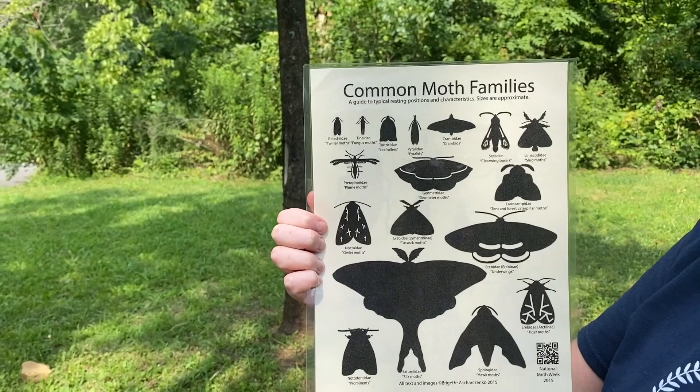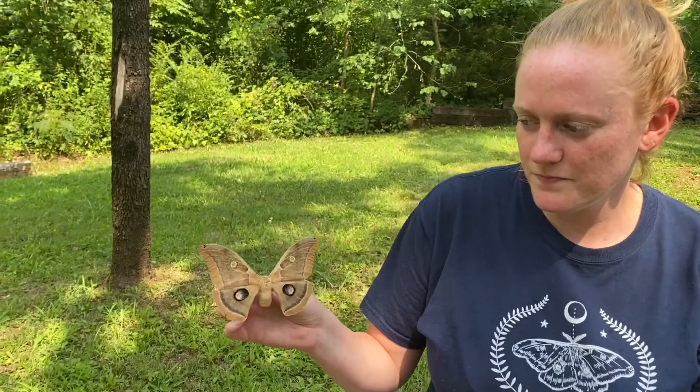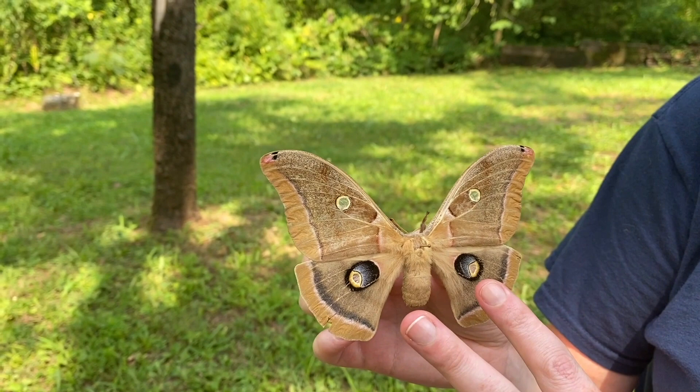We're going to discover three different moth species you can find here at Ruffner, a little more up close. Here is the Polyphemus moth. The Polyphemus moth has two eye-like patterns on its underwings, and it's actually named after the Greek god Polyphemus, which was a cyclops.